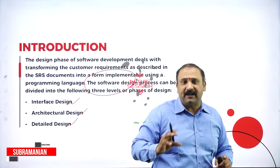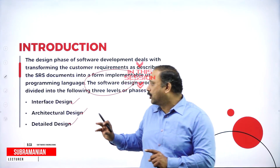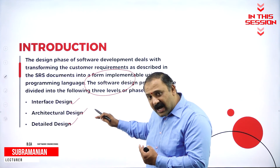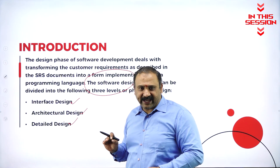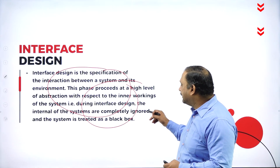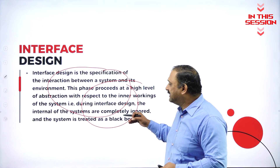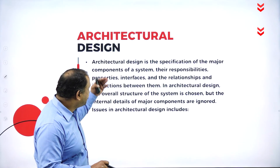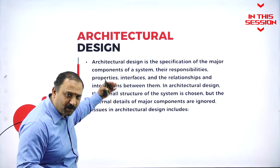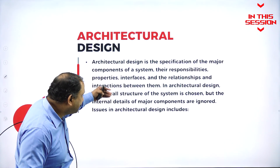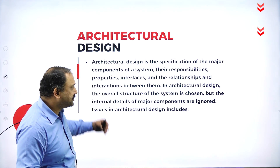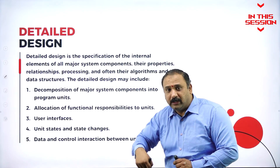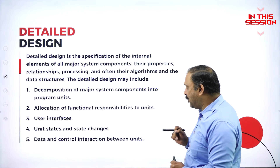This entire designing phase would be occupied by three parts. One would be the interface, the architectural, and the detailed design. Now during the interface design, the internal systems are completely ignored. Components of specific major system, their responsibilities, their interfaces and relationship between them — every single component that is involved in the process of making the model.